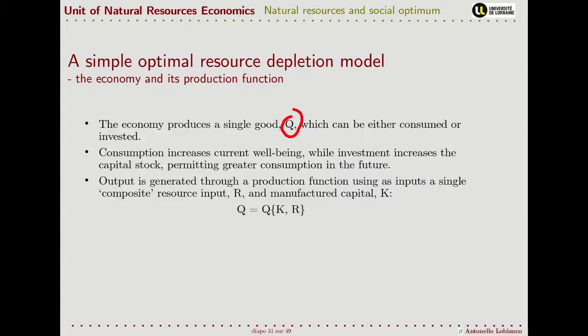The way this single good is produced is through production functions that use a single index of natural resources, R. So here is an index of the whole amount of natural resources used and K is this manufactured capital K that derives from the accumulation of Q in the previous years, in the previous moment of time. We will start looking at non-renewable resources and then we are going to generalize this model to renewable resources.